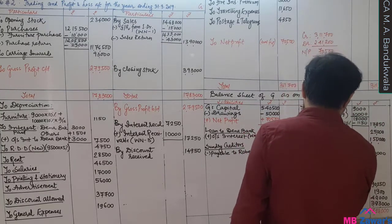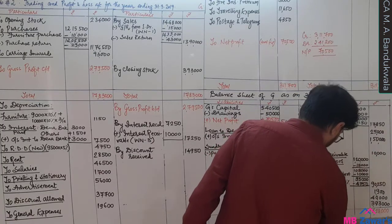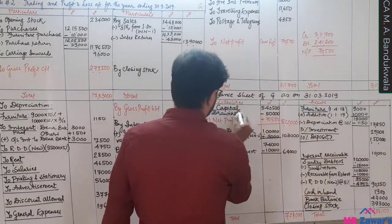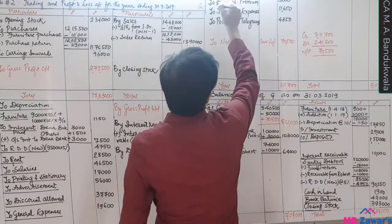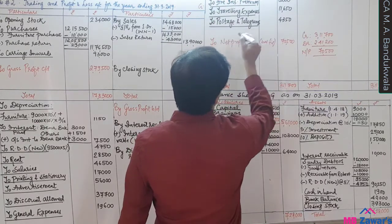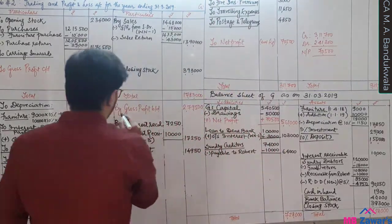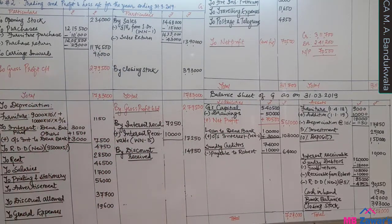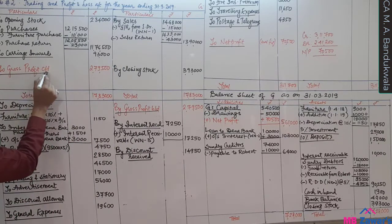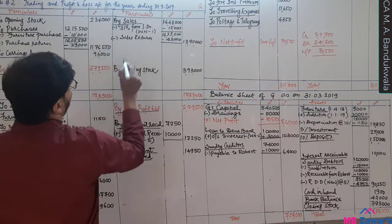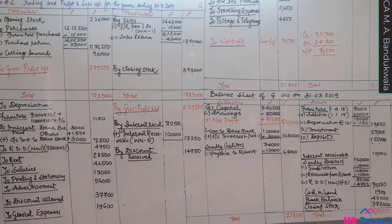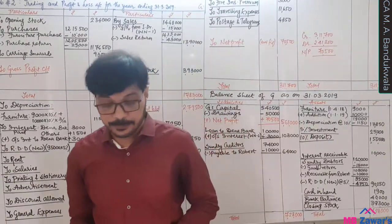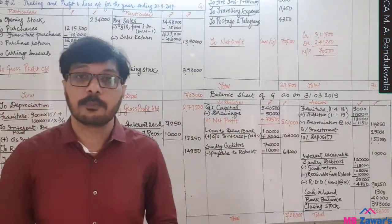Balance sheet totals: liabilities side — capital 5,61,000 plus loan Dena Bank 1,03,000 plus creditors 64,000 = 7,28,000. Assets side: furniture 17,850 plus investments 25,000 plus deposits 1,50,000 plus debtors 90,250 plus bank balance 40,000 plus closing stock 3,93,000 and other items — total 7,28,000. The balance sheet balances. This is all about problem number 2. If you have any doubt, please ask.